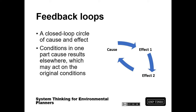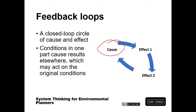Feedback loops are at the heart of systems thinking. A feedback loop is a closed loop circle of cause and effect. The conditions in one part of the system can cause results elsewhere. These results may also act on the original conditions through different elements that are connected by the whole causal loop diagram.